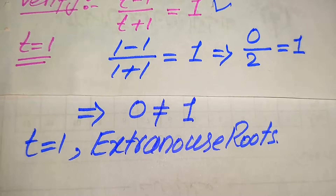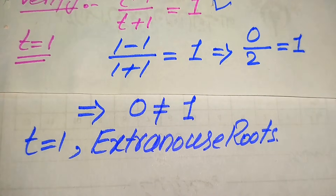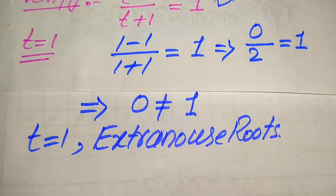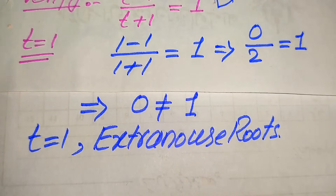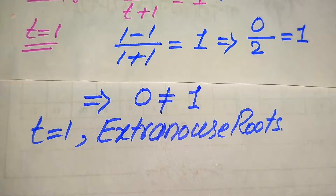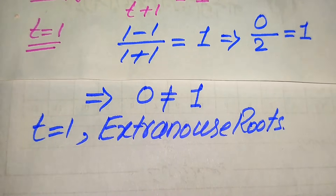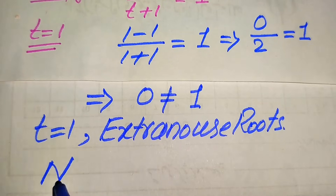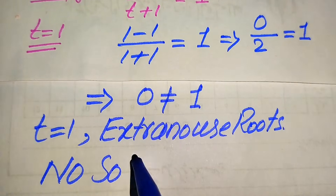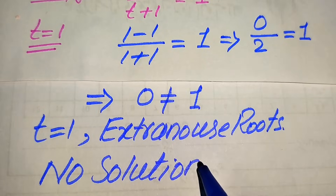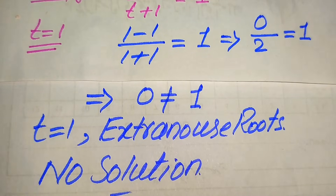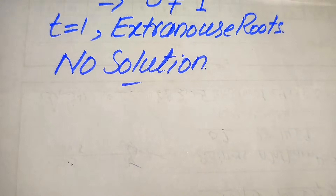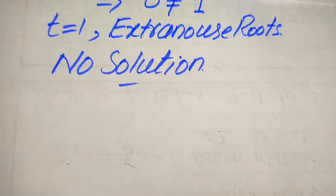Extraneous roots are those roots that do not satisfy the given equation. Roots that do satisfy the equation are called solutions of that equation. Since we have no root that satisfies our given equation, the given equation has no solution.